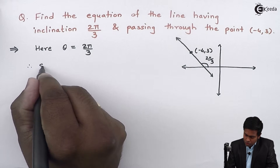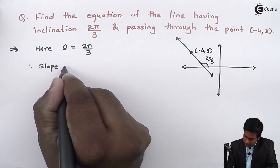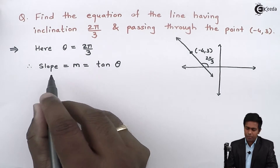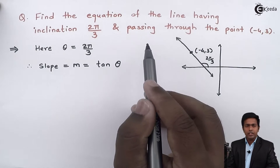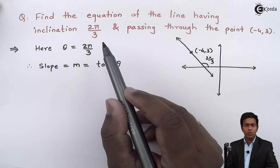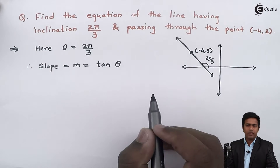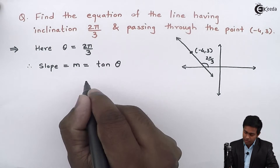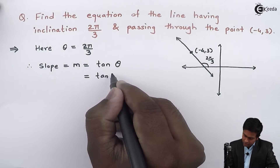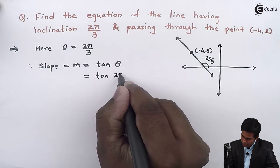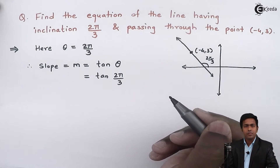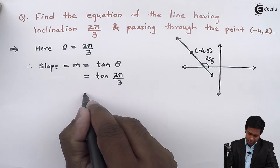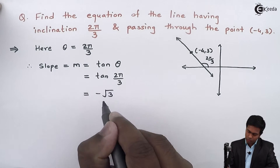The slope m is given by tan(θ). This is the formula for slope when the line is making an angle with the positive direction of the x-axis. By substituting theta as 2π/3, we get tan(2π/3). Calculating this, tan(2π/3) comes out to be -√3. So the slope m = -√3.